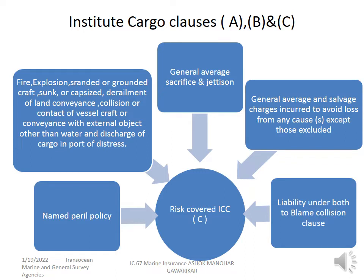Institute Cargo Clauses C is a named peril policy providing minimum coverage. The perils covered are: fire, explosion, stranding or grounding of a vessel or craft, sinking or capsizing, derailment of land conveyance, collision or contact of vessel, craft or conveyance with an external object other than water, and discharge of cargo at a port of distress. These are the only things covered under ICC C. General average sacrifice, jettisoning, etc. are also covered under ICC C.